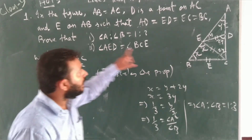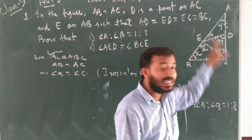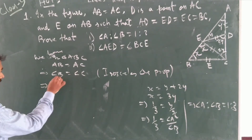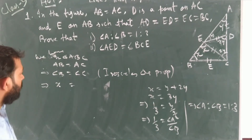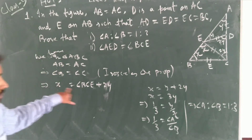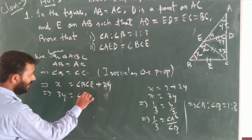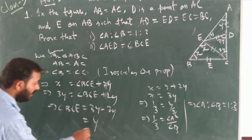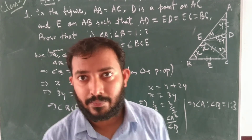For the next part, we need to show angle BCE equals angle AED, which is already Y. Angle B equals angle C, angle B is X. So angle C can be written as angle BCE plus 2Y. We know X equals 3Y, so 3Y equals angle BCE plus 2Y, giving angle BCE equals 3Y minus 2Y equals Y, which equals angle AED. That is exactly what was required to prove. I hope it is clear — do the presentation on your own. Thank you.